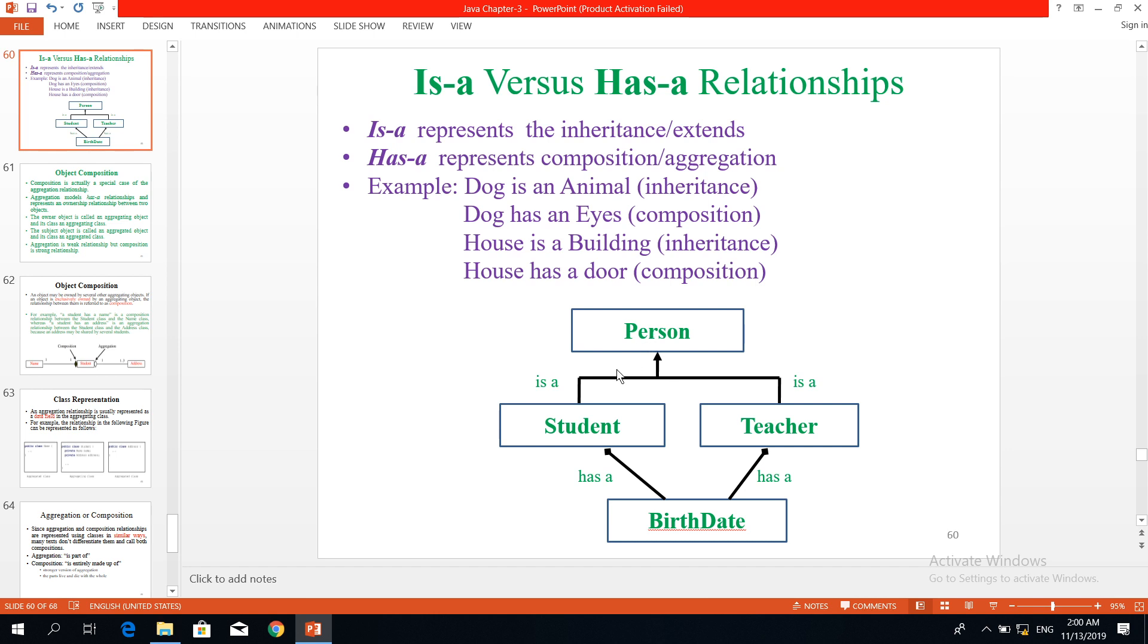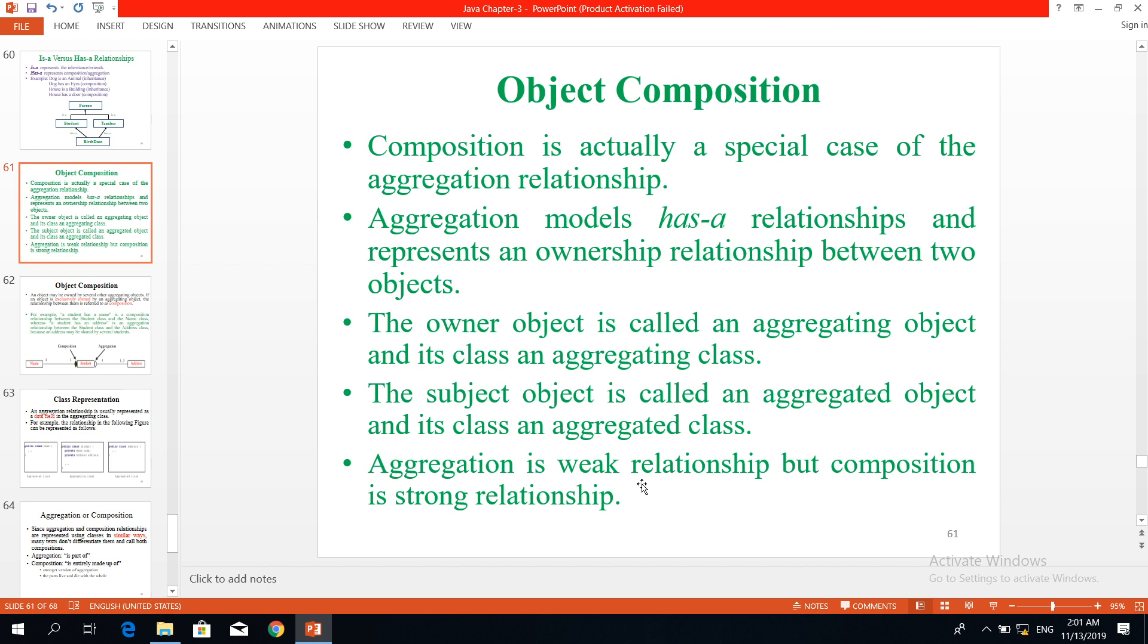For example, person - a student is a person, a student is a person, teacher is a person. This is inheritance. Student has a birthday, teacher has a birthday - this is composition or aggregation. The difference between aggregation and composition.